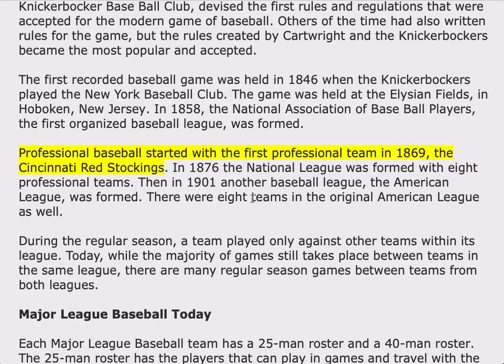Professional baseball started with the first professional team in 1869, the Cincinnati Red Stockings. In 1876, the National League was formed with eight professional teams. Then, in 1901, another baseball league, the American League, was formed. There were eight teams in the original American League as well.